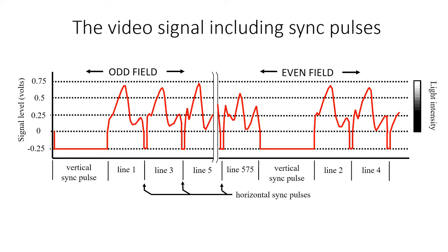In UK and European countries, the total raster contains 625 lines, but 49 of these contain no picture information. These were taken up by the vertical sync pulse, which was used to enable the TV receiver to scan back vertically, ready for the next field. So the odd field contains lines 1, 3, 5, etc., up to line 575, and the even field contains lines 2, 4, 6, etc., up to line 576.